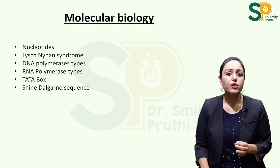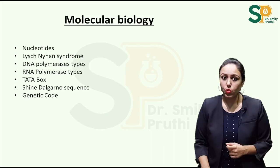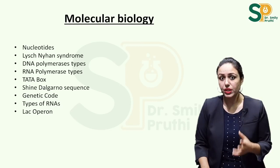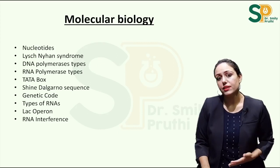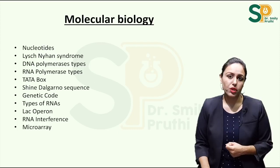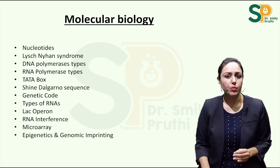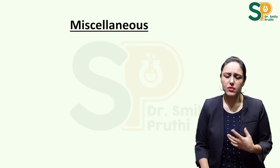Study the TATA box, which helps in initiation of transcription, and know the differences between the TATA box and the Shine-Dalgarno sequence. Also cover genetic code, various types of RNAs, various types of ribozymes, and the operon model — especially the lac operon in prokaryotes. RNA interference or silencing techniques using micro RNA or siRNA are important, along with molecular biology techniques like microarray, PCR, RFLP (restriction fragment length polymorphism), epigenetics, and genomic imprinting — the most common genomic imprinting change is DNA methylation.